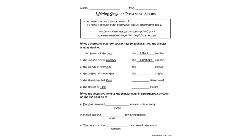The third one says the bicycle of the child — adding apostrophe S changes it to the child's bicycle. Next we have the coffee of the mother — adding apostrophe S onto the end of mother gives us the mother's coffee. Next we have the skateboard of Kate — adding apostrophe S makes it Kate's skateboard. And the glasses of Liam becomes Liam's glasses.